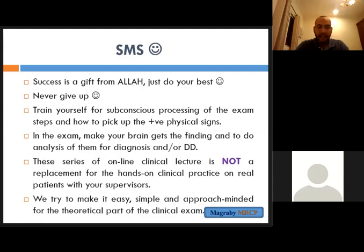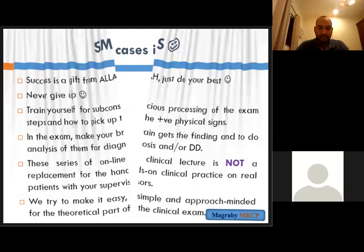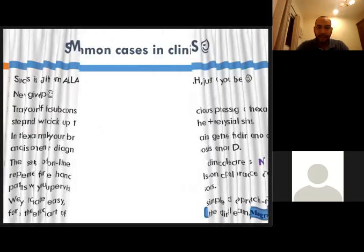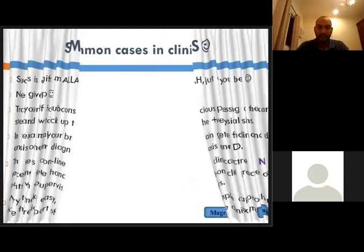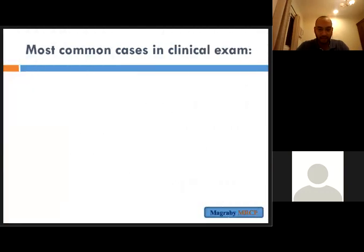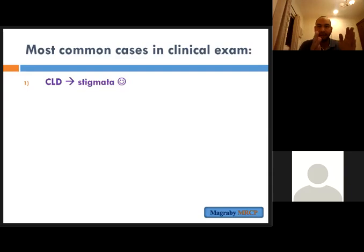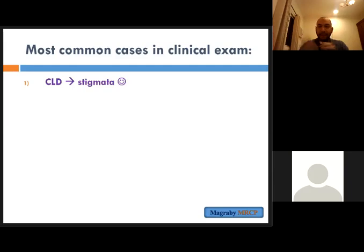For abdominal cases examination, the most common cases that come in the clinical exam can mostly be divided into renal cases, liver cases, and lymph node cases.